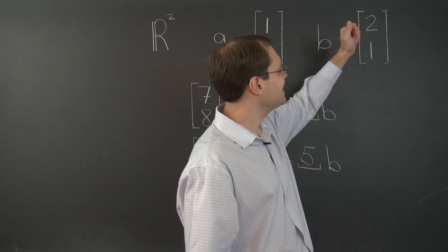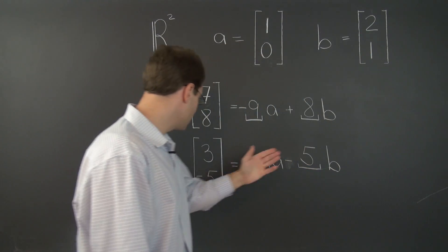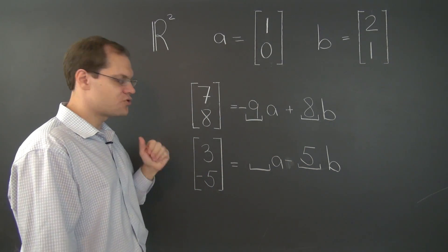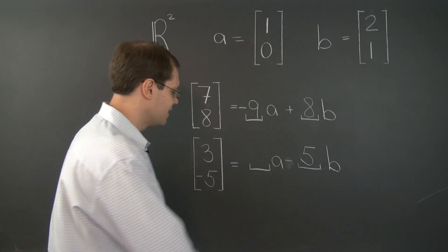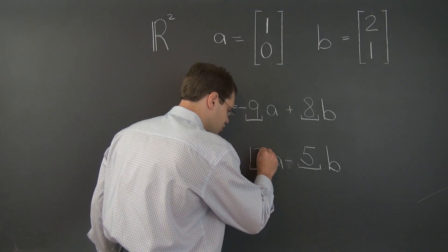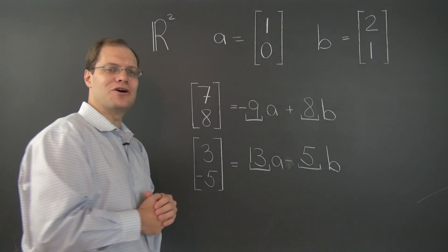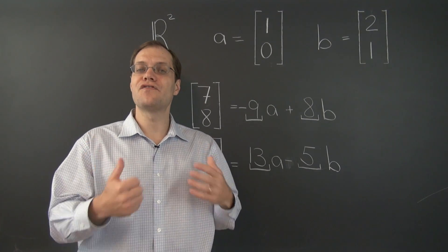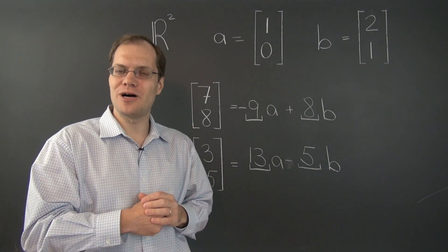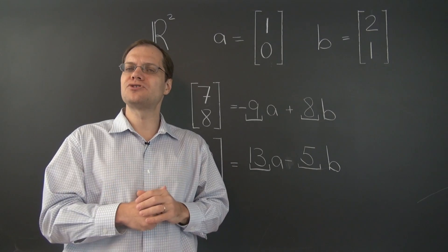So we now have to get 3 in the first entry. So far, we have negative 10. So we have to go from negative 10 to 3 with the help of A. And of course, it's 13. So there you go. We have just solved our first two decomposition problems in R2 by the bootstrapping approach.